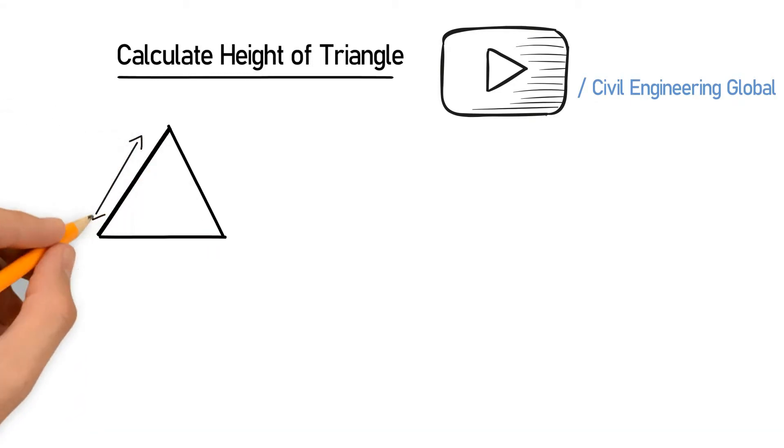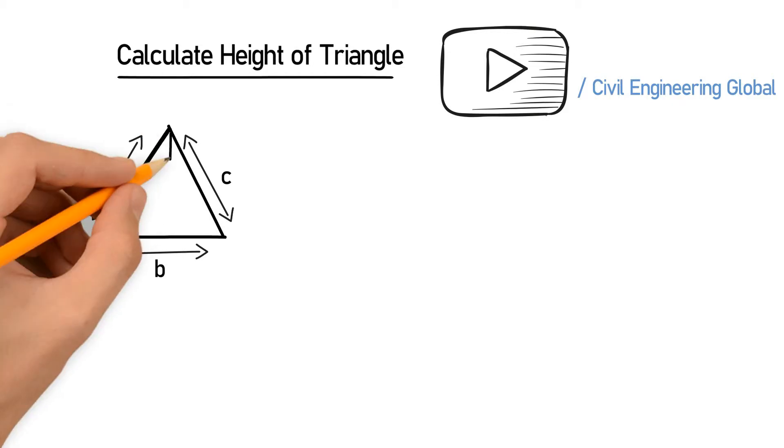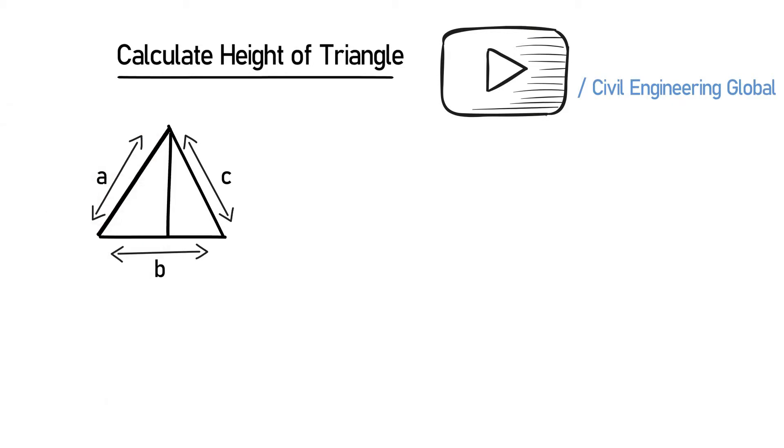This side is A, this side is B, and this side is C. This line in the middle is HB. Suppose an example, we have the following data.